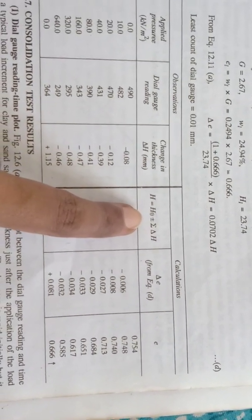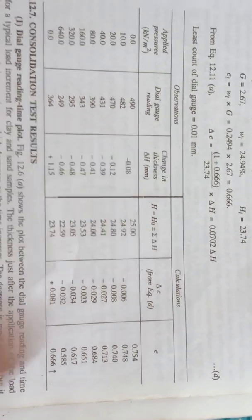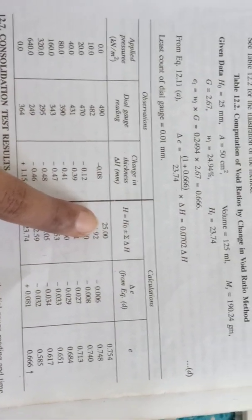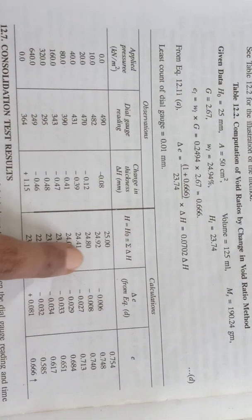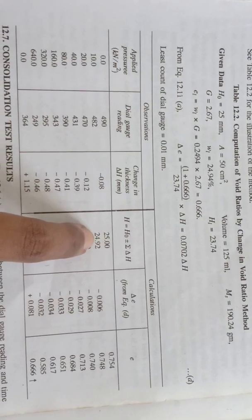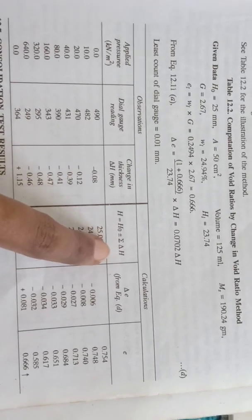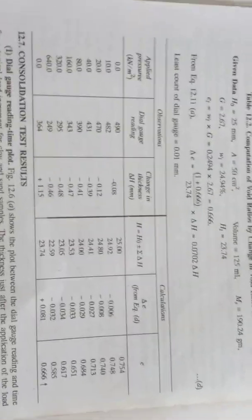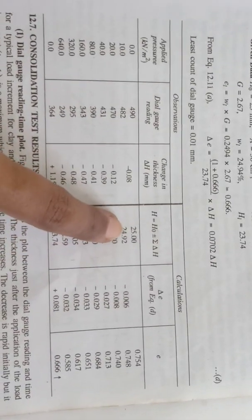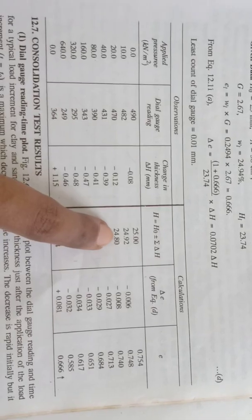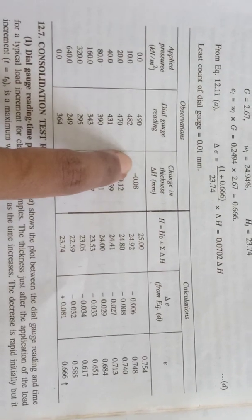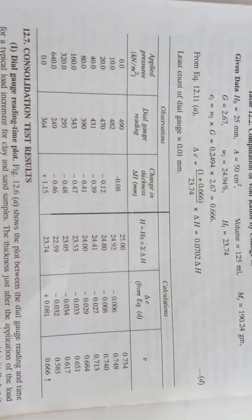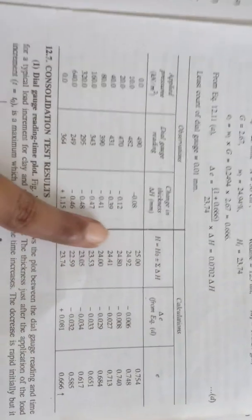The current height h is calculated as H0 ± Σδh. In this example, the initial thickness is 25 mm, so: h = 25 ± 0.08 = 24.92 mm. Further, h = 25 − 0.08 − 0.12 = 24.80 mm for the next increment.